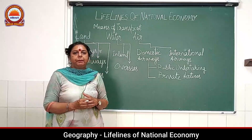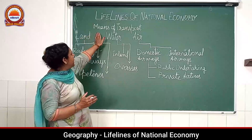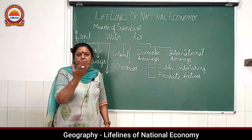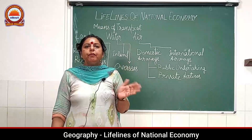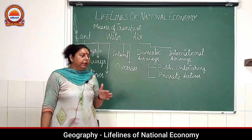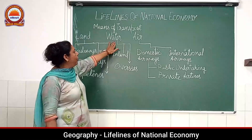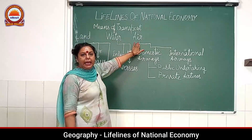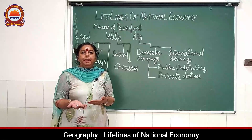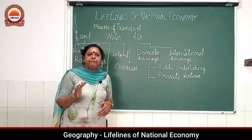Coming to the aspects of the chapter we are going to cover — we have means of transport. You have read about these transport systems many times, but here we will be discussing them in a very systematic way. We have land, water, and air — these are the three modes of transportation which help the economy of our country run at a very fast speed.